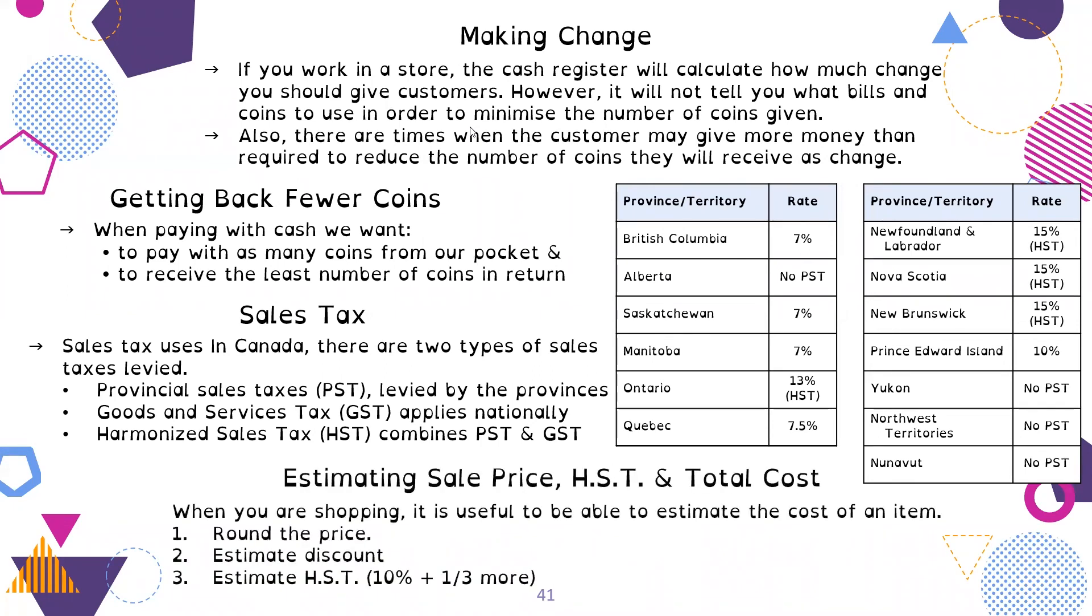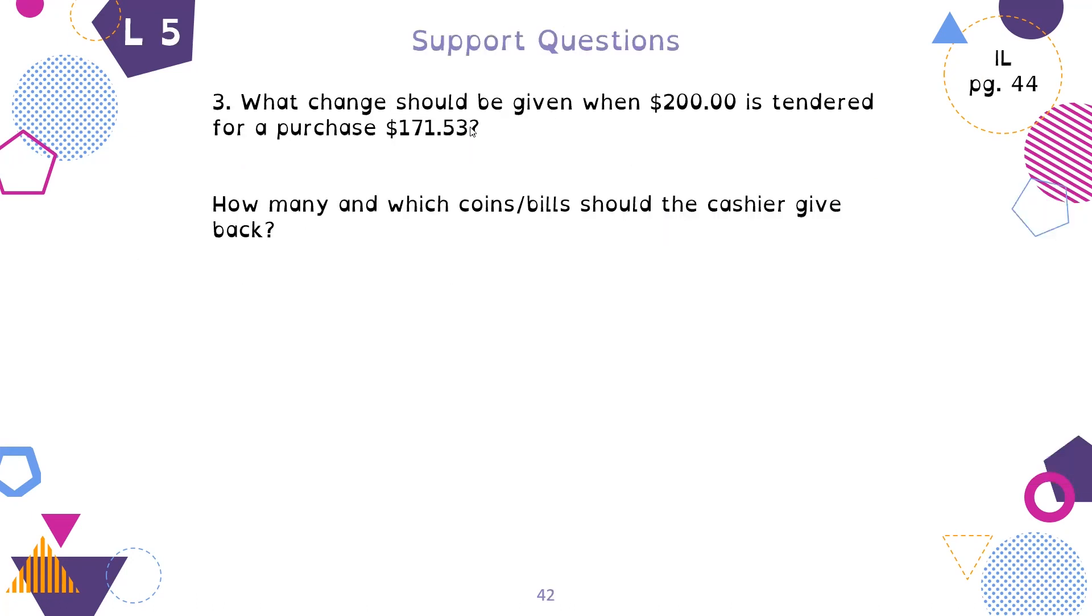When we're estimating a sales price, when we're actually buying something, sometimes we're going to estimate it. Being able to estimate is really useful. Generally you round the price to make it a friendly number. Then you estimate your discount if it's something on sale. The discount happens before the taxes. Then you estimate your HST, which in Ontario is 13%. We can do 10%, which is a friendly number, and about a third more to figure out what your HST is going to be approximately.